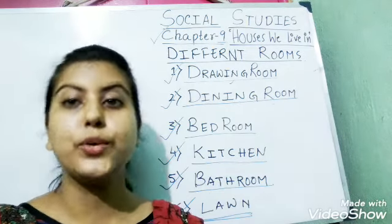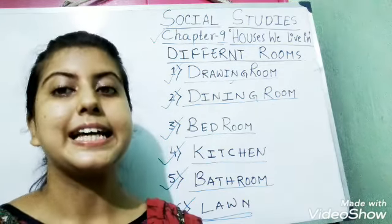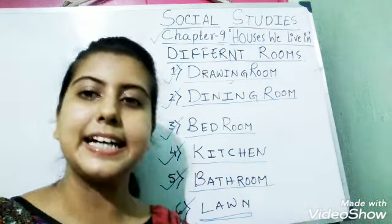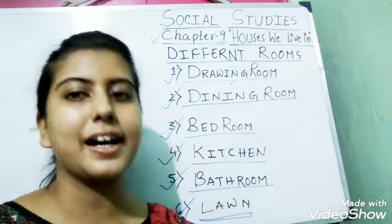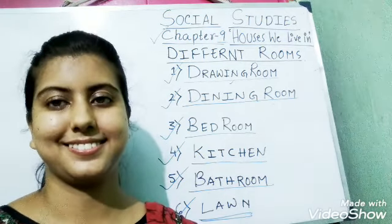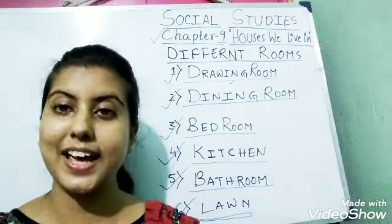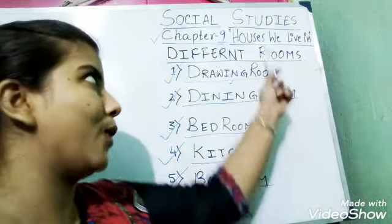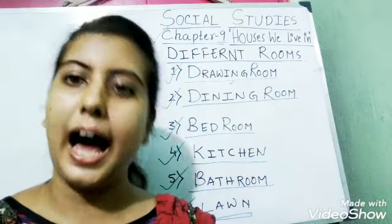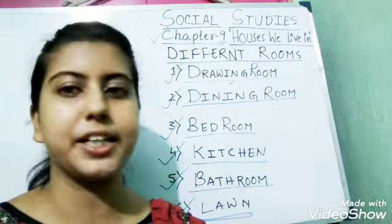Children, we must remember that we must keep our house clean and tidy. We should not keep our things here and there, as that will make our house dirty. So always try to keep your house clean — that will make you healthy. This was all about 'Houses We Live In.' I hope all of you have understood the chapter. Don't forget to read your book.